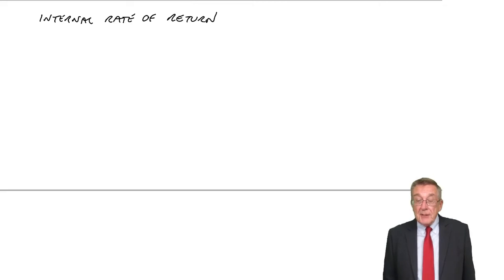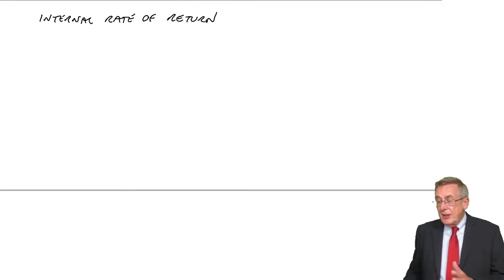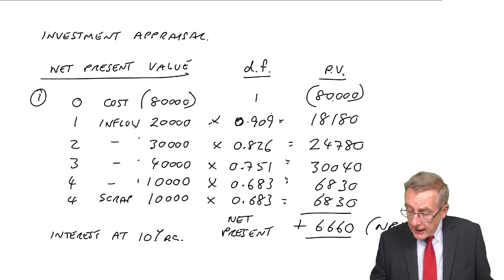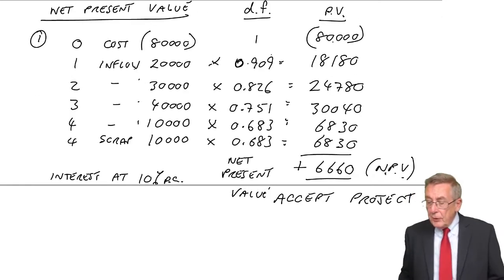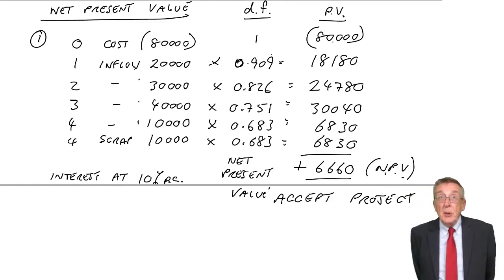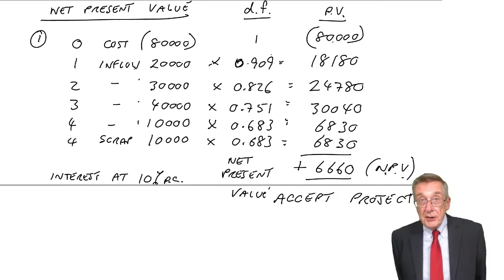In this lecture, we're going to look at something called the internal rate of return, which I introduced at the end of the previous lecture. In the previous lecture, we thought the cost of money was 10%, we discounted, we got a positive net present value, and so we would accept the project.